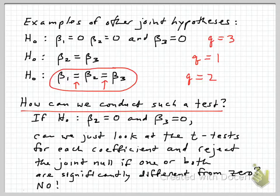Now, how can we conduct such a test? You might think we could just look at the separate t-tests for each coefficient, and reject this joint null hypothesis if one or both are significantly different from zero. We would be viewing it as a compound test. If we can reject either, it seems like we have rejected the joint hypothesis. This, however, turns out not to be the right way to do it. No. There's a couple of reasons why this is not an adequate way to conduct a joint hypothesis test.